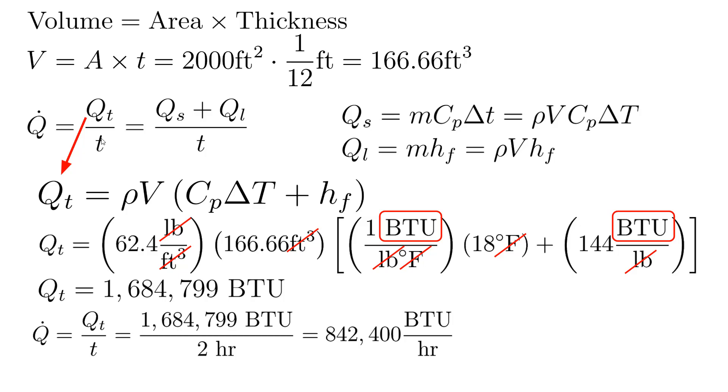Again, if we wanted it to happen faster, we could divide by, say, one hour, and then the cooling load would be much higher. Or vice versa. If we wanted to give it more time, then we'd be dividing by a larger amount of time. The total answer would be smaller, which means there's a smaller heat load. And then we can turn that into refrigeration tons, because usually when we're sizing a cooling system of any kind, we're going to talk in tons. So there's 12,000 BTUs per hour per ton. And that leaves us with 70.2 tons. And that's the final answer.